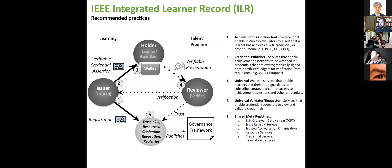The five components are: number one, the way that the actual education record is created; number two, the way that it's wrapped, signed, and published; number three, the way that the holder of the universal wallet curates and controls access to records; number four, how the reviewer is able to check the validity, verification, and trust of those records without having to go back directly to the issuer — across a distributed ledger. What makes this possible to work across networks is a series of shared meta-registries.